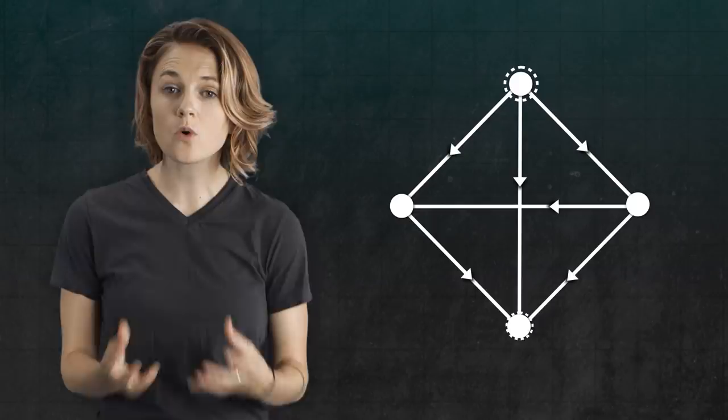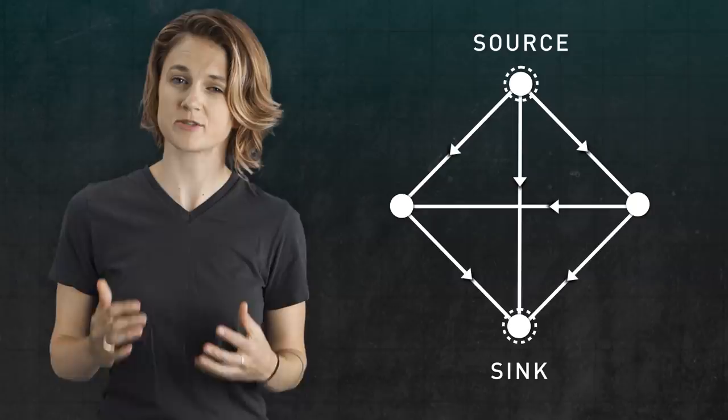Last episode, we talked about how to form an undirected simplicial complex from an undirected graph, by converting each of the complete subgraphs into a simplex. Similarly, we can form a directed simplicial complex from a directed graph, but importantly, we only convert complete subgraphs with a source and a sink into simplices.